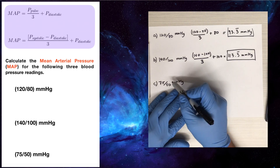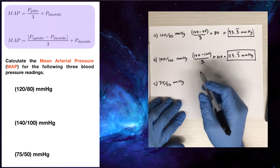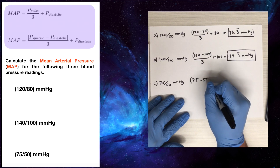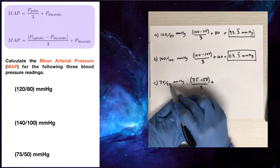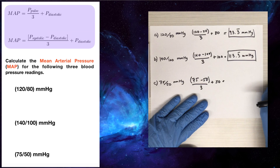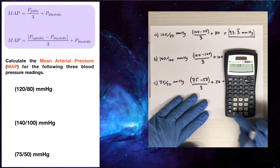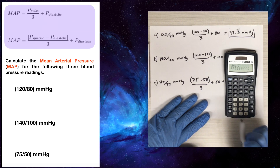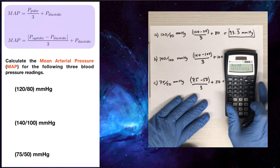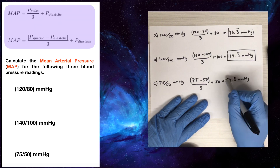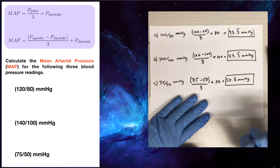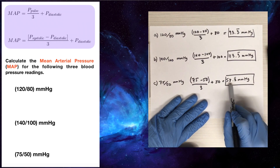For the last example, a blood pressure of 75 over 50: we calculate the pulse pressure, which is 75 minus 50, and divide by three, then add on the diastolic pressure of 50 mmHg. So 75 minus 50 equals 25, divided by three gives 8.3 repeating. Adding the diastolic of 50 gives us a mean arterial pressure of 58.3 mmHg. As we'll see when we return to the clinical discussion, this is a low mean arterial pressure.